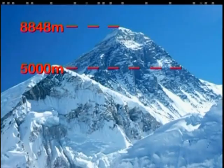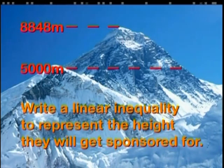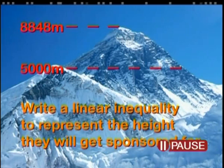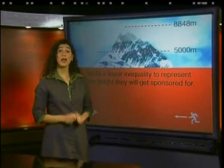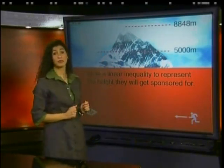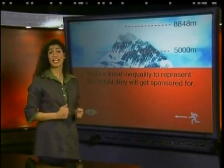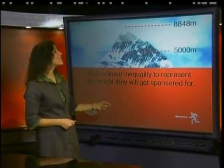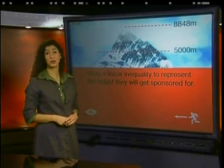Now, here's an interesting one. Two mountain climbers from France decide to raise money for AIDS orphans in South Africa. Once they pass the 5,000 meter mark, sponsors will pay them according to how high they climb. Mount Everest is 8,848 meters high. Write a linear inequality to represent the possible heights they will get sponsored for. Well, they will only get sponsored for more than 5,000 meters and they can only go up to 8,848 meters as that is the height of Mount Everest, the highest mountain in the world.